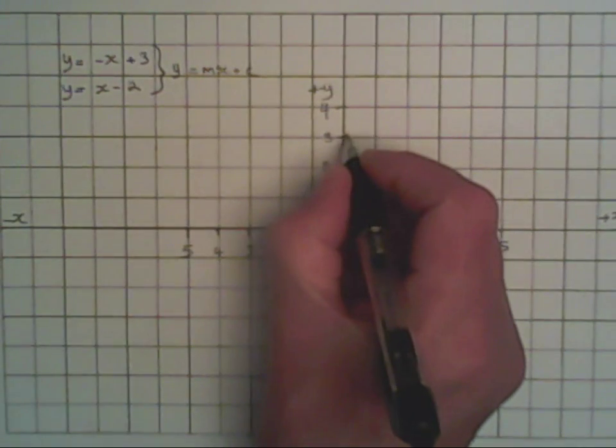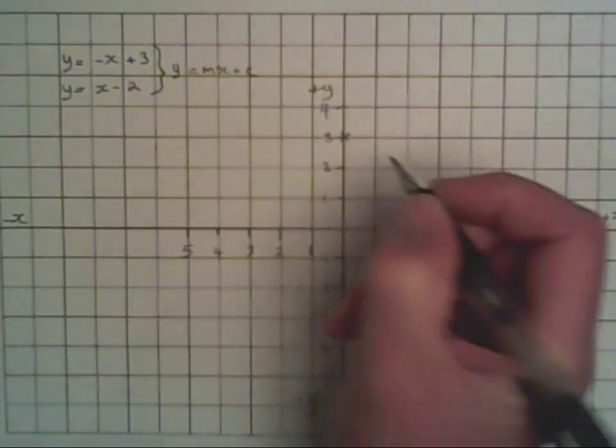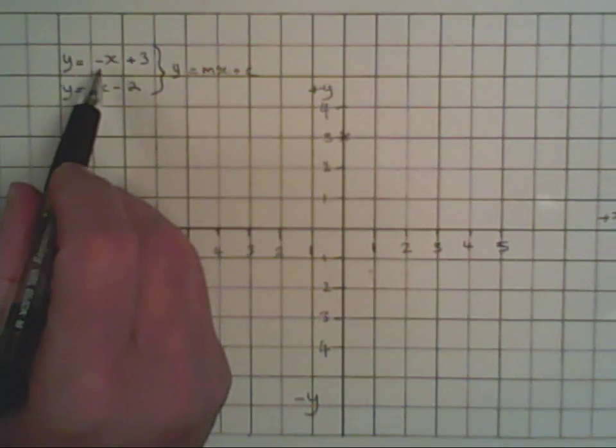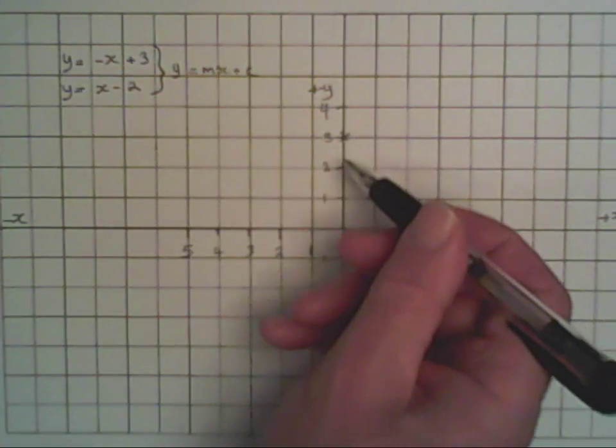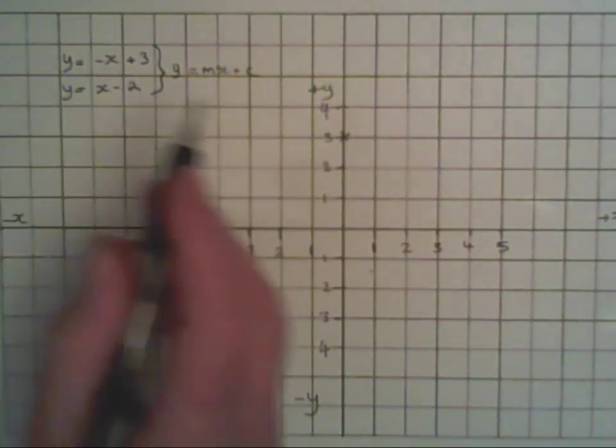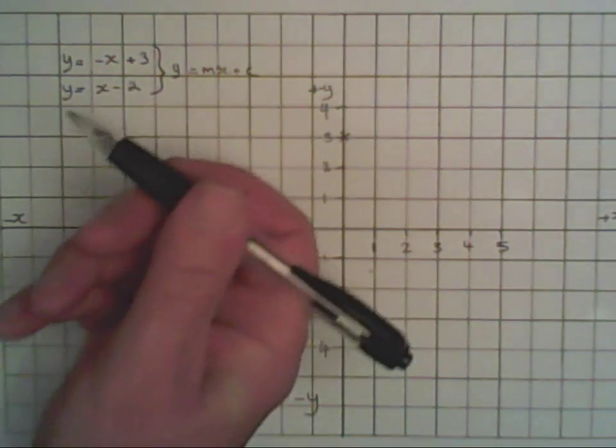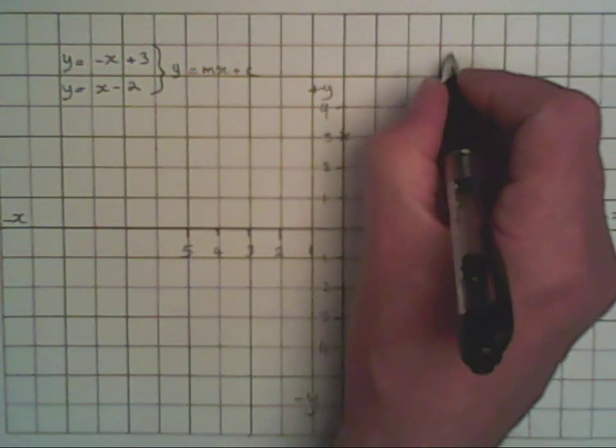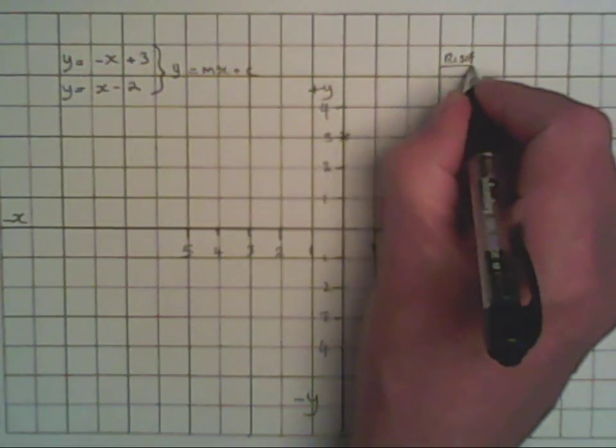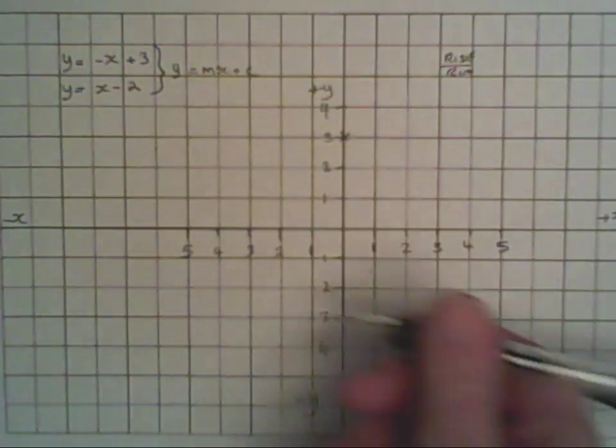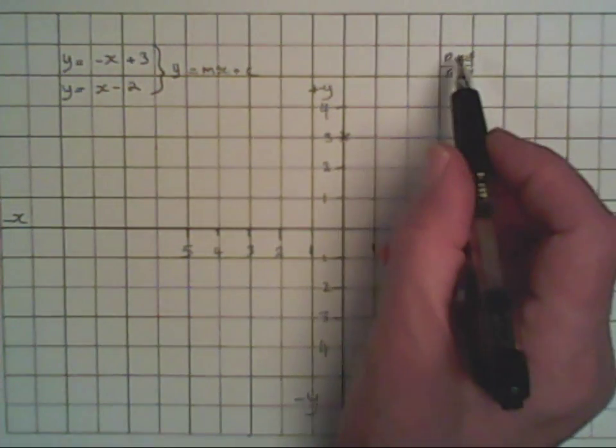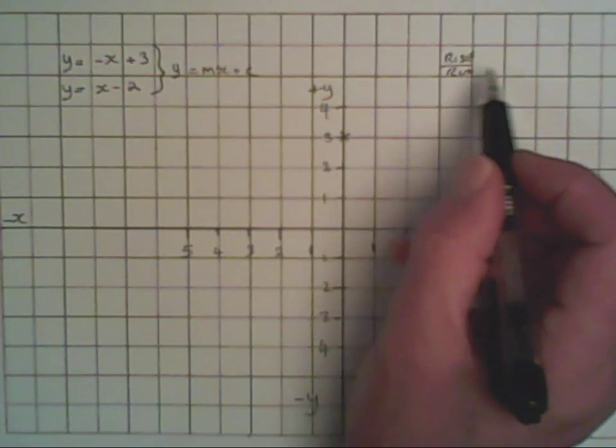Now, the next thing is, this is minus x, so the value is going to be coming downwards. And it's 1x. Now, the slope, this mx is the slope, the steepness. And the slope is what we call the rise, which is the y-axis, over the run, which is the x-axis. If we've got a fraction like this and the answer must be 1, then the top and the bottom must be equal. So we could have 2 over 2.